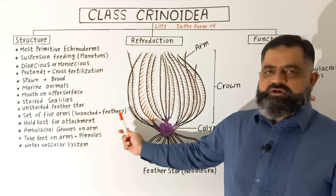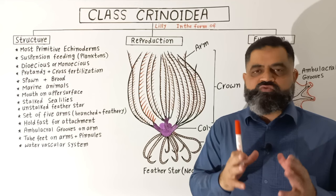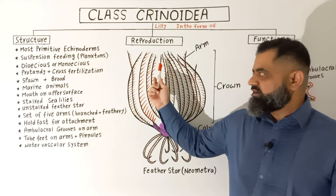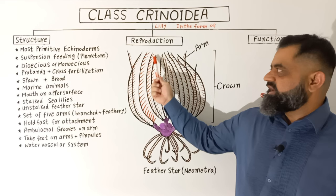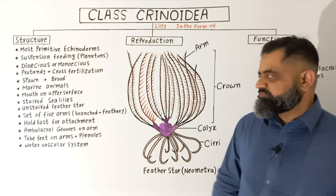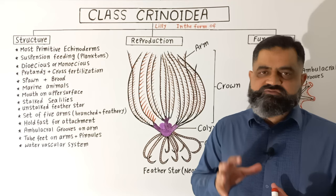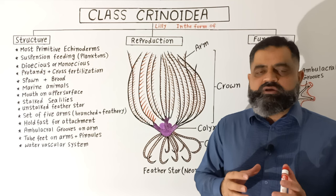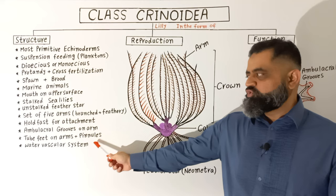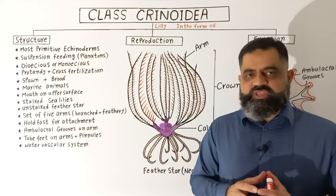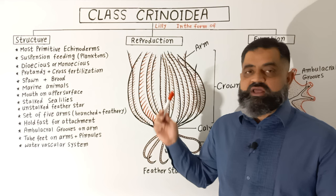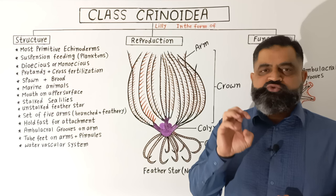These branches further divide, and the arms contain pinnules which give them a feather-like appearance. They have holdfasts for attachment, and their arms contain grooves known as ambulacral grooves, used for transporting food material from the arms and pinnules towards the mouth. They also have tube feet on their arms and pinnules — a special characteristic of this phylum. The tube feet are connected to the water vascular system, through which water enters and leaves the body, causing the tube feet to extend and assist in feeding. The tube feet also contain mucous glands which help trap food.